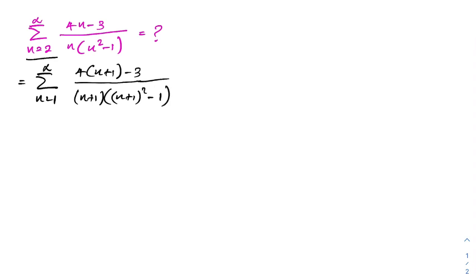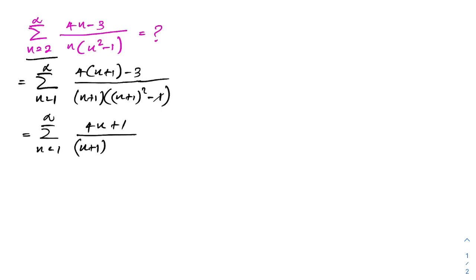We can simplify: sum from n equals 1 to infinity of 4 times n plus 4 minus 3, which gives 4n plus 1, over n plus 1. In the denominator, n squared plus 2 times n plus 1 minus 1 — the minus 1 terms cancel — leaving n squared plus 2n.